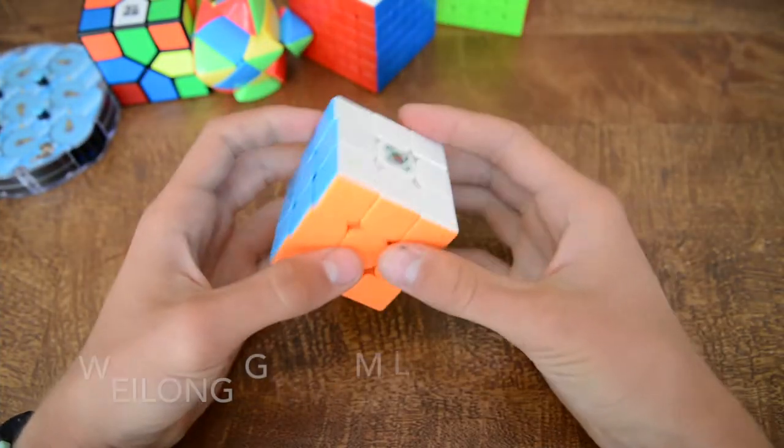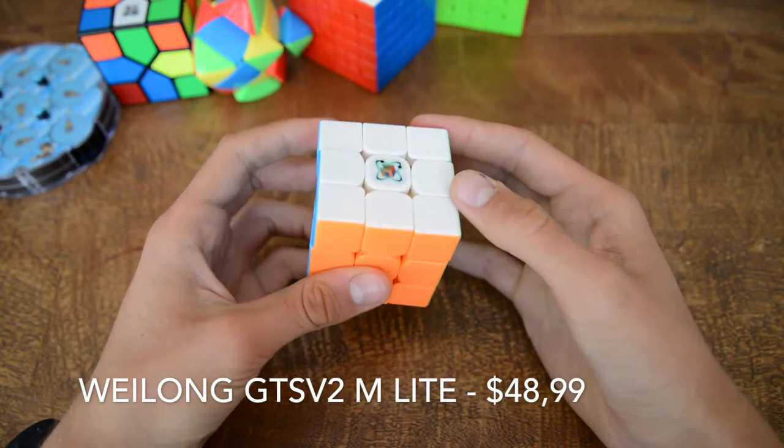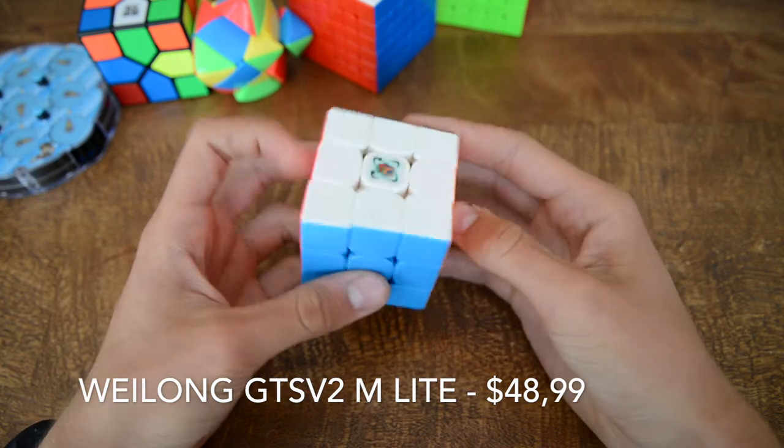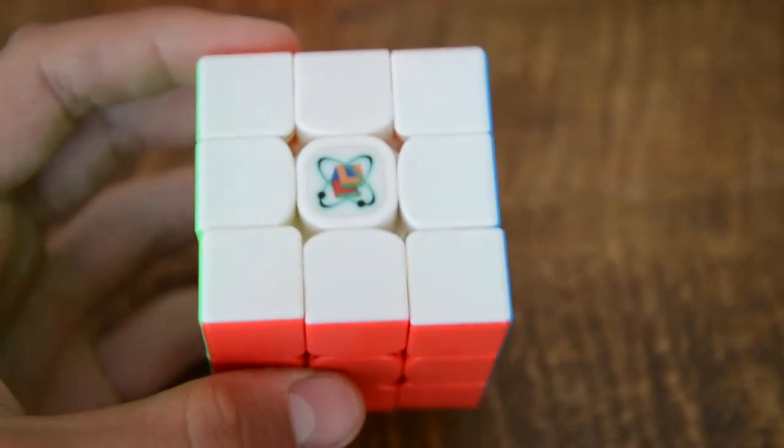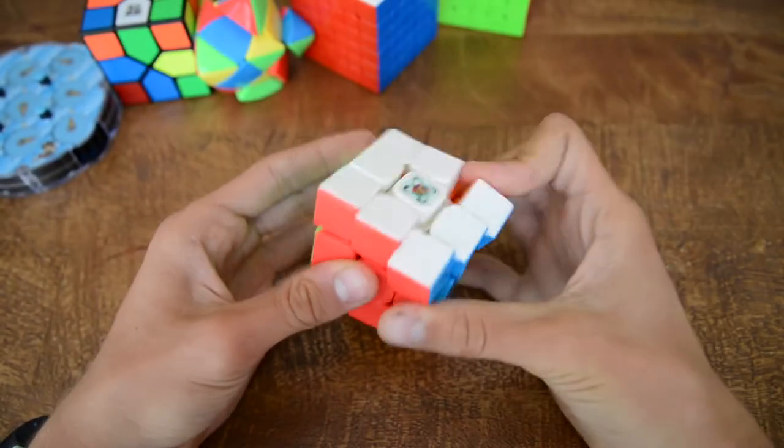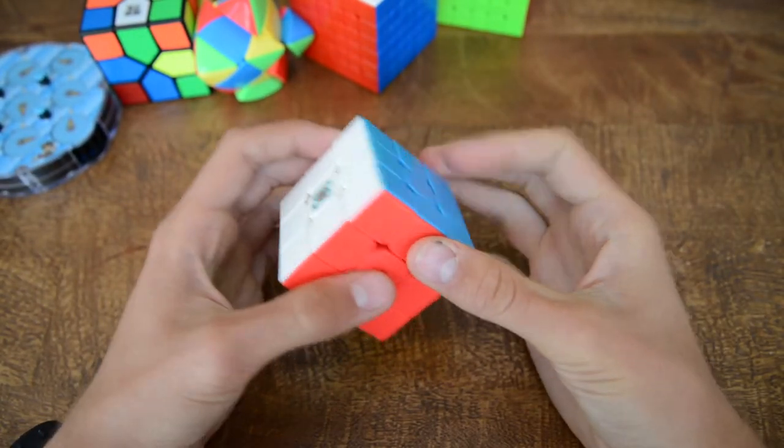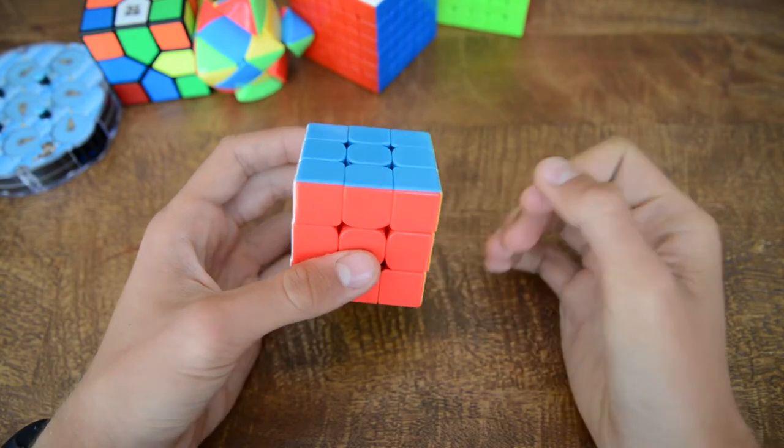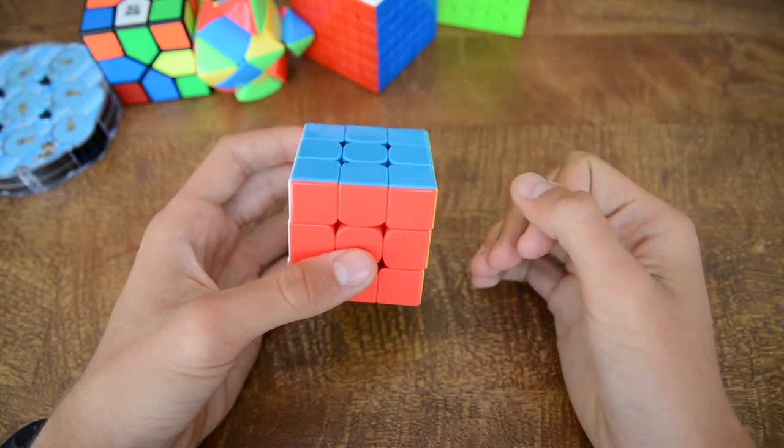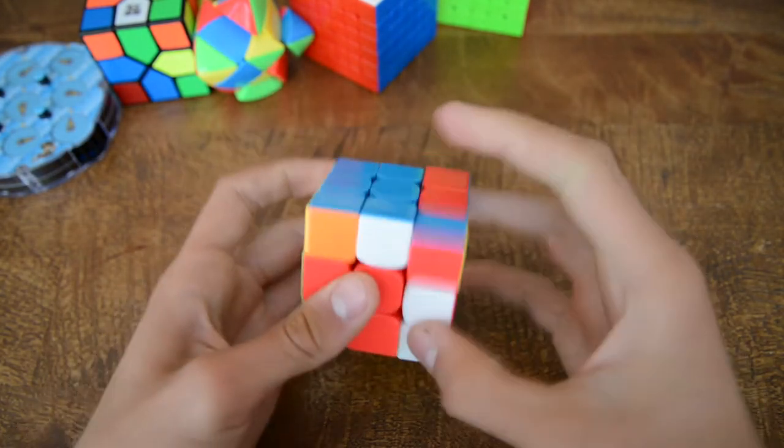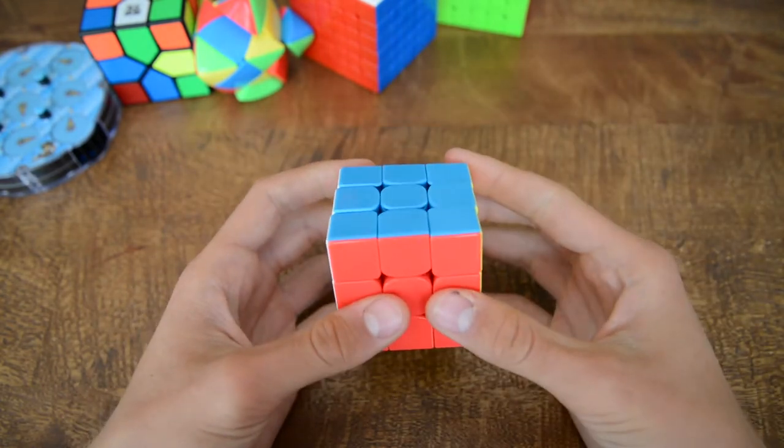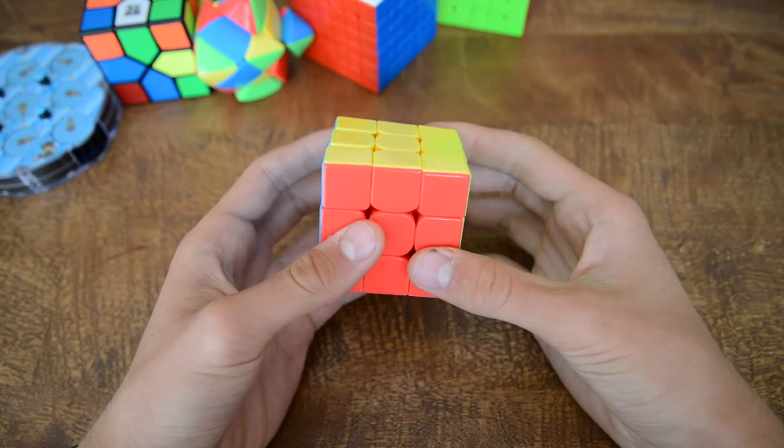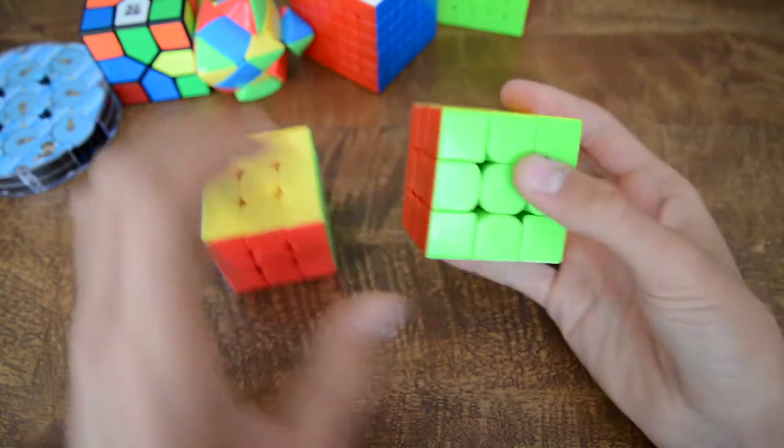So next up, we have the Wuxiang GTS 2 M Lite from thecubicle.us. When I first unboxed this puzzle, it was good, but I mean for $50? Come on. It seriously wasn't worth it.